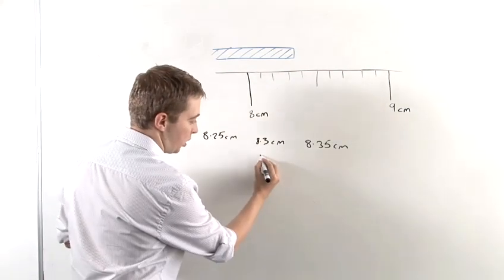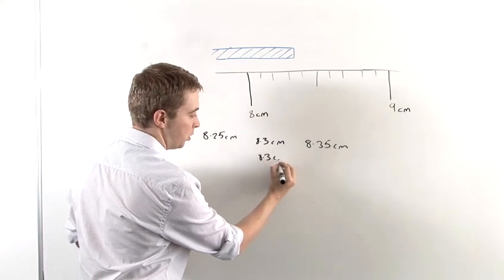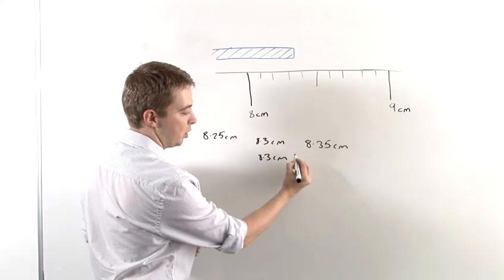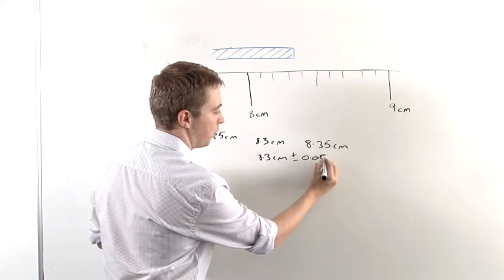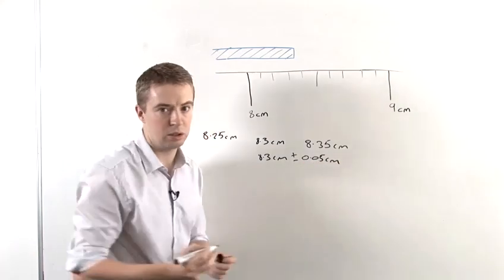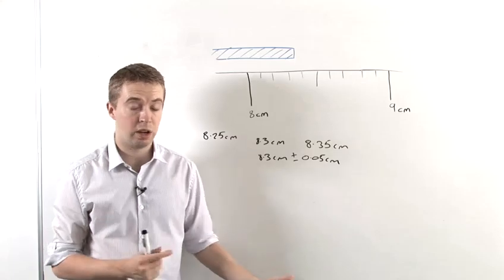So in this case, we would say we've measured this piece of wood to be 8.3 centimeters plus or minus 0.05 centimeters. And that's how you calculate uncertainty.